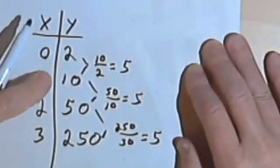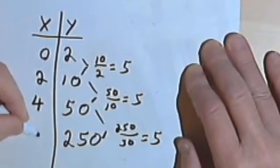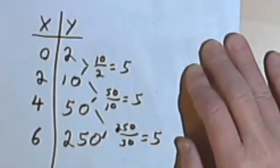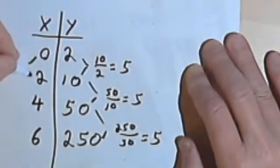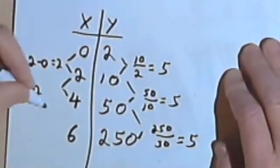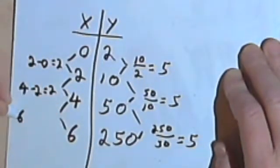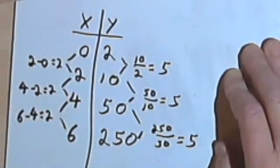I'm gonna change the input column. I'm gonna go from 0 to 2 to 4 to 6. I've got a common difference. I'm increasing by 2, but the change from one number to the other is 2. So the change in x is 2. Let's look at the change. 2 minus 0 is 2. 4 minus 2 is 2. 6 minus 4 is 2. So delta x is 2.